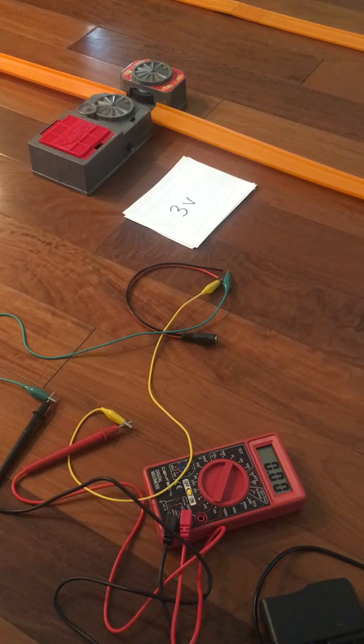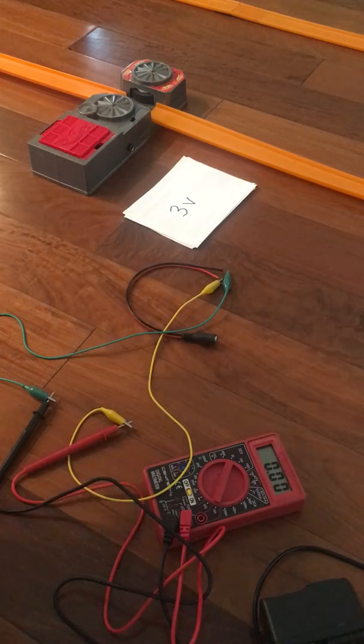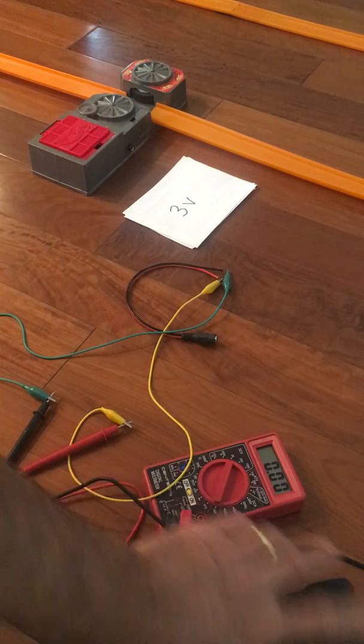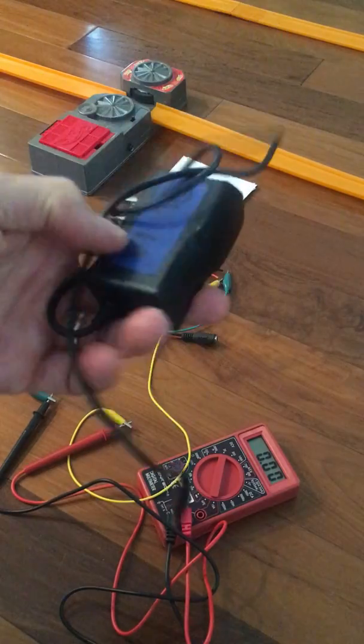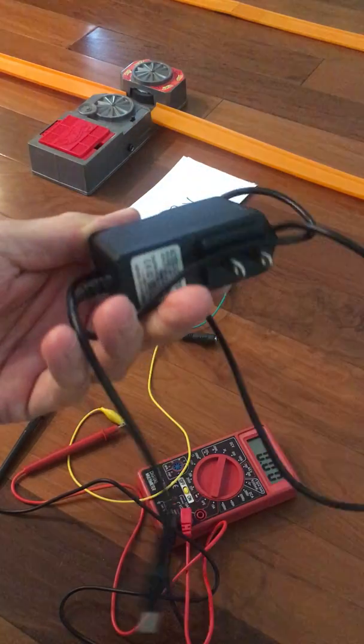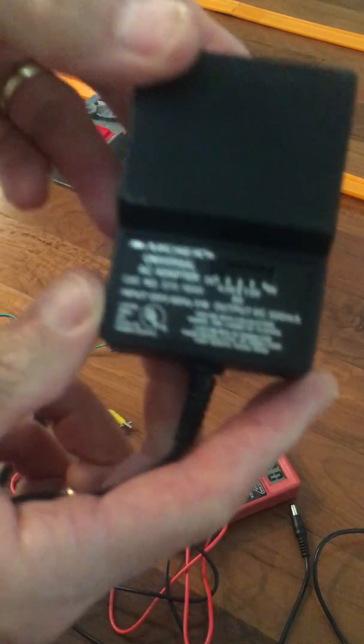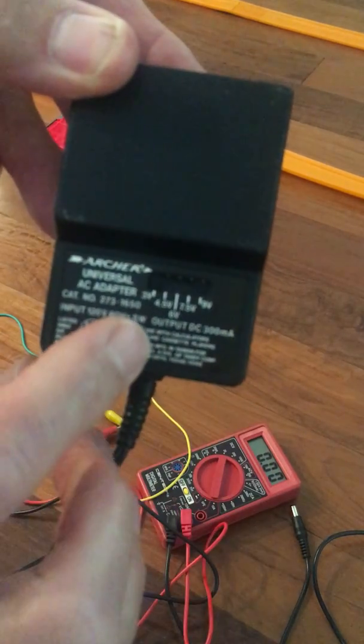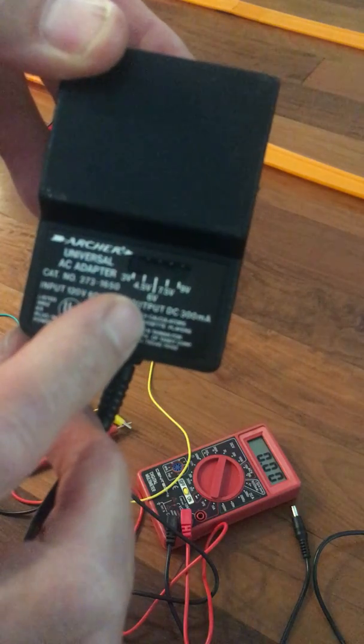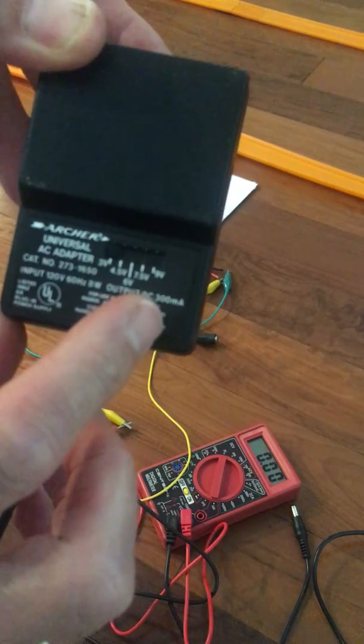I have here one of the boosters that I've modified to run on AC, and we're going to run it on AC. But instead of using one of the single voltage adapters, like this 3-volt adapter, we're going to use a multiple voltage adapter. You can see here it has settings for 3, 4.5, 6, 7.5, and 9 volts.